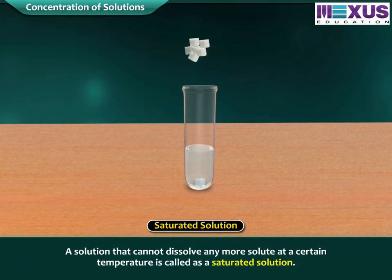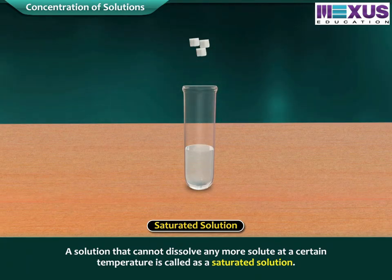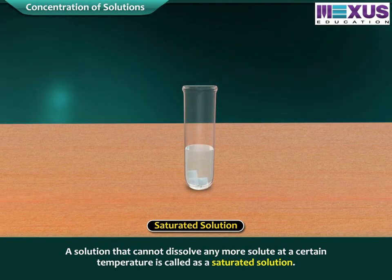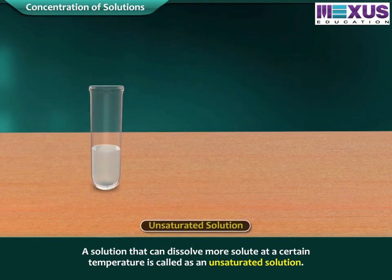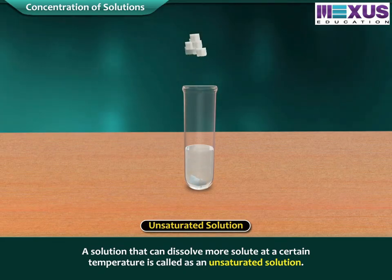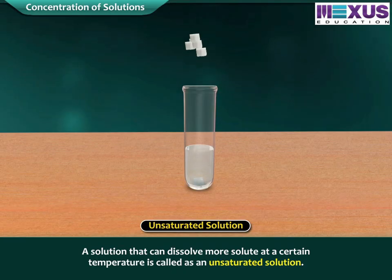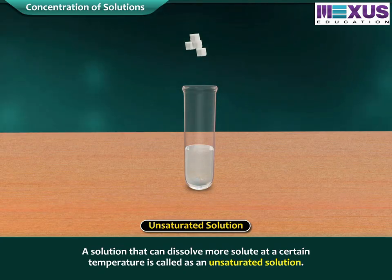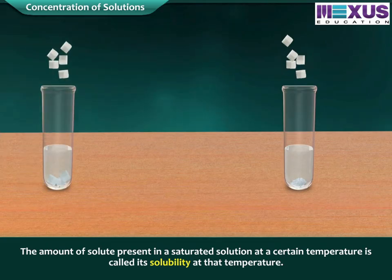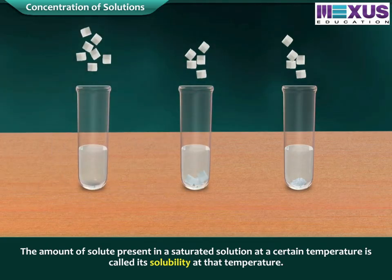A solution that cannot dissolve any more solute at a certain temperature is called a saturated solution. A solution that can dissolve more solute at a certain temperature is called an unsaturated solution. The amount of solute present in a saturated solution at a certain temperature is called its solubility at that temperature.